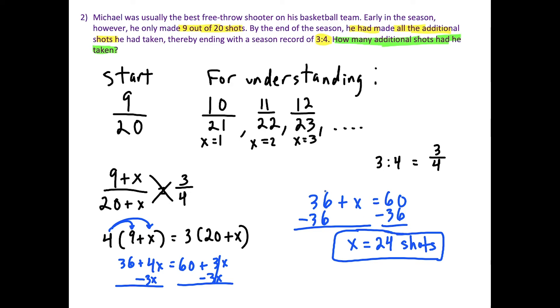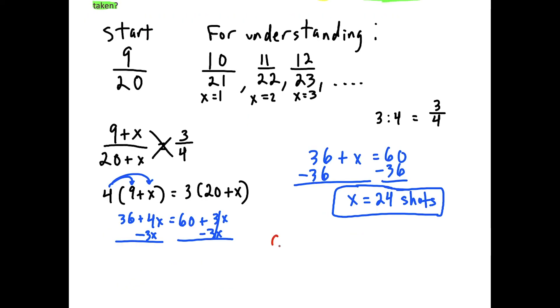But for a question like this, you should absolutely check to see that the numbers satisfy the original conditions. So to check here, we're just going to plug this back in and see if it does in fact work out. Remember, he started off making 9 out of 20 shots. And if we're claiming that he took an additional 24 shots, well that means he made 24 shots. So that means he made 33 shots in total.